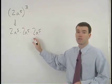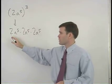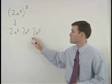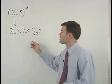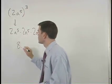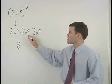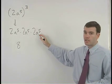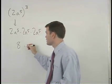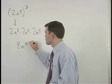When multiplying these three terms together, simply multiply their coefficients. 2 times 2 is 4 times 2 is 8, and add the exponents. 5 plus 5 plus 5 is 15. So we have 8a to the fifteenth.